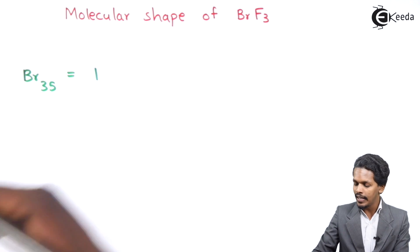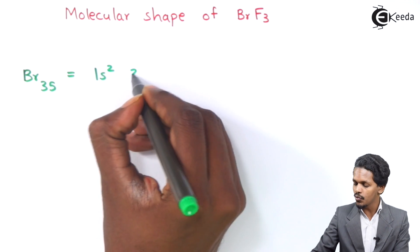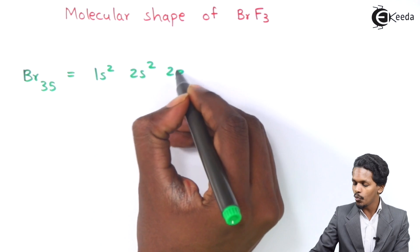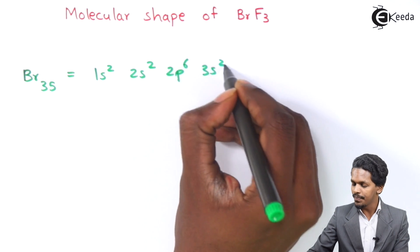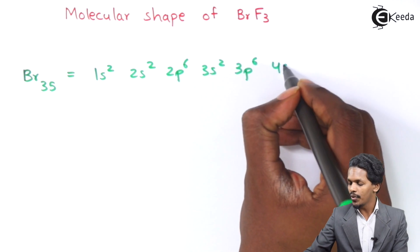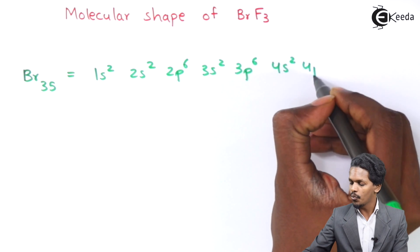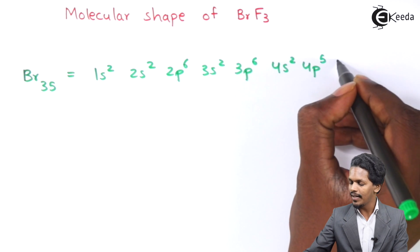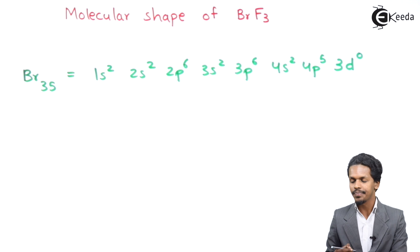So we can give the electronic configuration as 1s2, 2s2, 2p6, 3s2, 3p6, 4s2, 4p5, and we can also write 3d0.